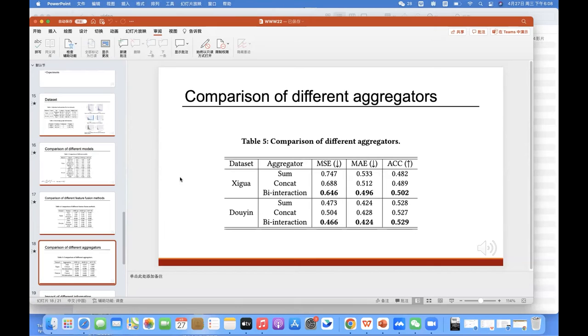Here, the effect of different information aggregators in tree attention network is shown. We can see that bi-interaction works best because of its ability to perform full interaction.